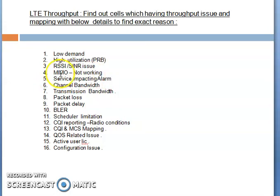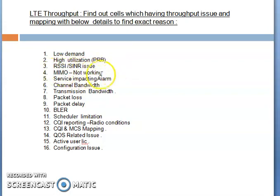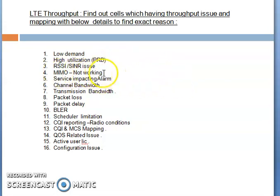The fourth factor is MIMO — Multiple Input Multiple Output — which plays a vital role in throughput. If you are getting higher modulations like 16QAM or 64QAM but MIMO is not working properly, the user is not getting good throughput. You can map with your RI (Rank Indicator) and MIMO utilization. There are two types of MIMO: open loop and closed loop. Check the configuration in the eNodeB to ensure it is properly working — whether open loop, closed loop, or closed loop spatial multiplexing — and verify the rank indicator distribution (RI 1, 2, 3, or 4) based on your MIMO configuration.